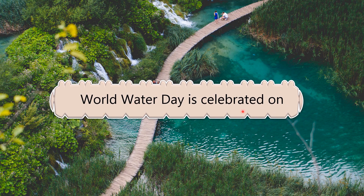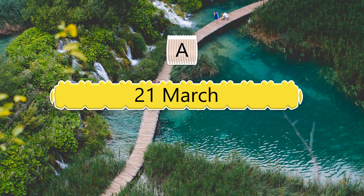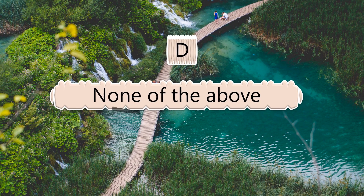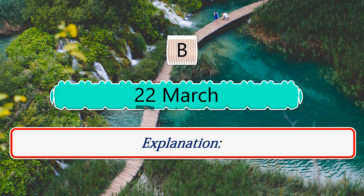World Water Day is celebrated on which date? Options: 21st March, 22nd March, 21st June. The answer is 22nd March.